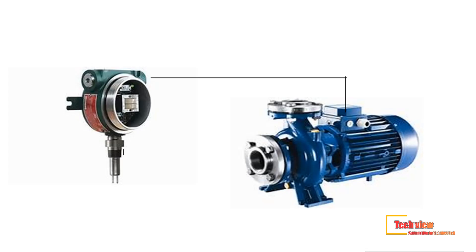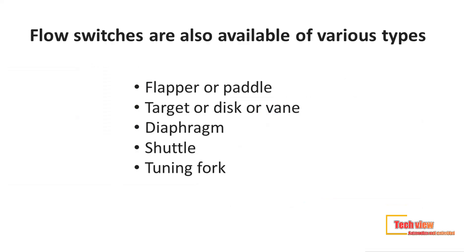Flow switches are devices that monitor the flow through a channel and send a trip signal to various devices in the system, such as pumps. The pump can be indicated by the flow switch to shut down or turn on. Some of the general uses are for the protection of the pump, protection of the cooling circuit, and alarms for flow rates that are too high or too low.